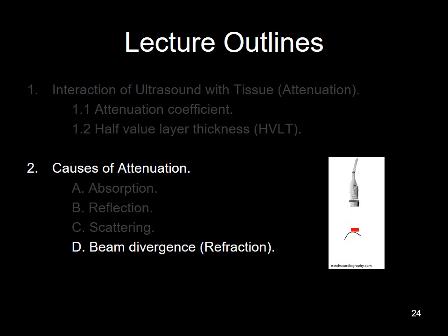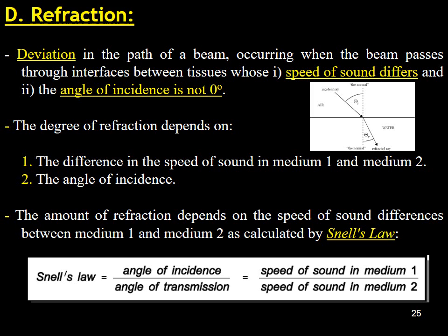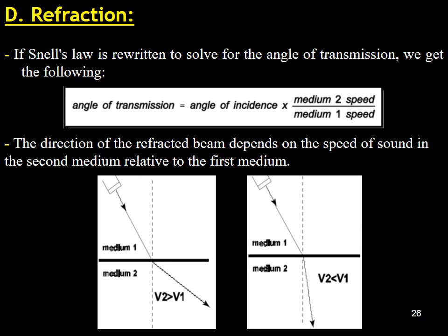Our final point will be about refraction, or beam divergence, which is one of the causes of attenuation. The changing direction of a sound wave as it moves from one medium to another is referred to as refraction. This deviation in a beam's path occurs when the beam passes through interfaces between tissues with different sound speeds, at an angle of incidence that is not zero degrees. The degree of refraction is determined by two factors: the difference in sound speed between mediums, and the angle of incidence. Snell's law can also be referenced here — the direction of the refracted beam depends on the speed of sound in the second medium relative to the first medium.